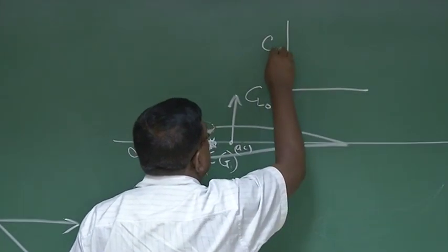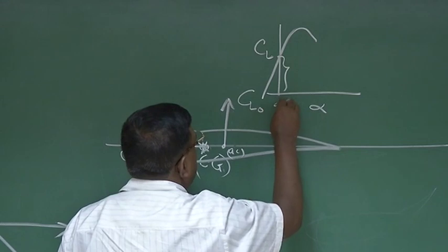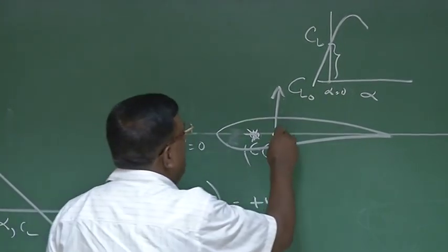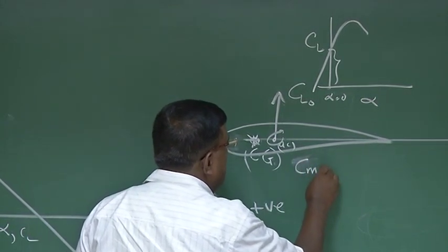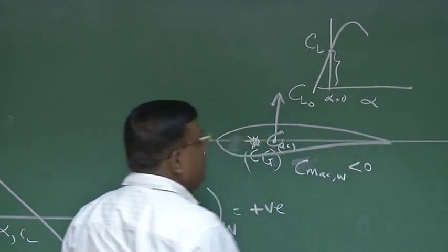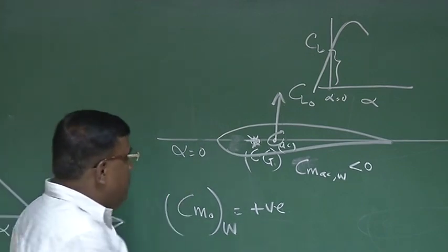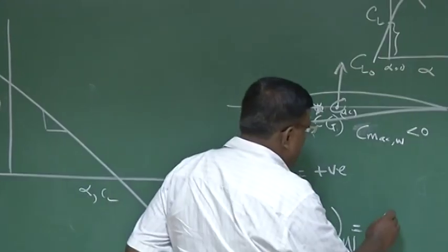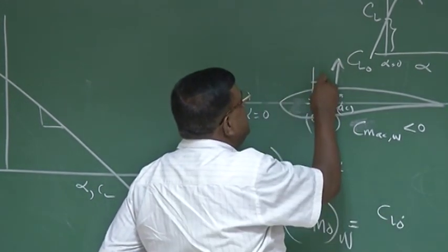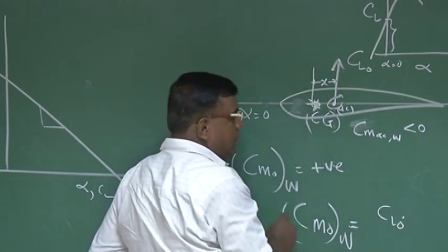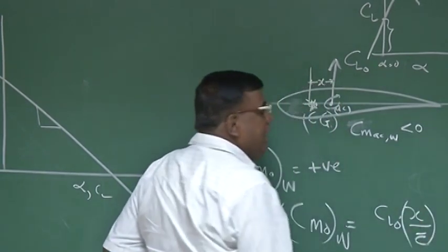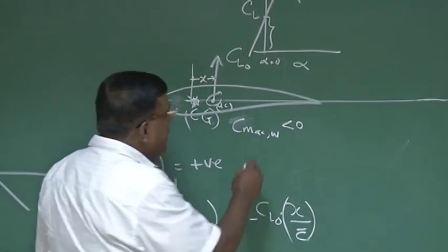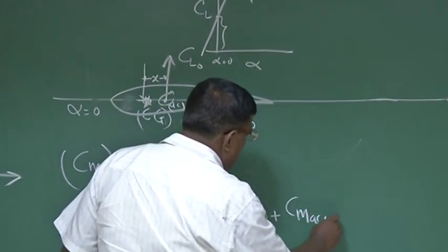If you recall CL versus alpha for a cambered airfoil, at alpha equal to 0, there is a lift. So CL0 will act. Also, because it is a cambered airfoil, it will have CM AC wing as negative, as I explained in the earlier lecture. So if I now try to find out what is the CM0 contribution by the cambered wing, where AC is kept behind CG, this will be CL0 into x — this distance between the AC of the wing and CG of the plane — non-dimensionalized by dividing by mean aerodynamic chord — and this will be a negative, nose-down moment. Similarly, it already has CM AC wing which is also less than 0.